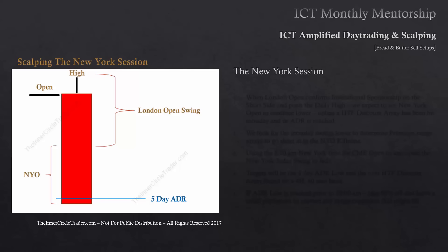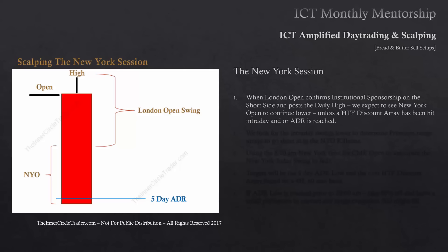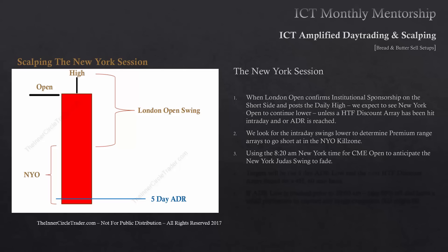Scalping the New York session. When London open confirms institutional sponsorship on the short side and posts the daily high, we expect to see New York open continue lower unless a higher time frame discount array has been hit intraday and/or the average daily range low is reached. We look for the intraday swings lower to determine premium range arrays to go short at in the New York kill zone. Using the 8:20am New York time CME open to anticipate the New York Judas swing to fade. The targets will be the 5-day average daily range low and the next higher time frame discount array found on a 4-hour or 60-minute basis.